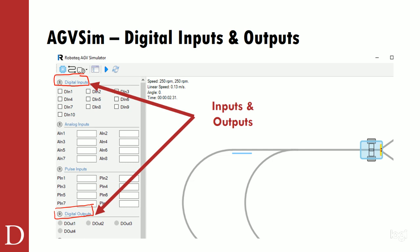Examples of digital inputs: you could have sensors, you could have switches, push buttons — these could all be things considered inputs. Digital means that they are one or zero, on or off. They're Boolean in nature.